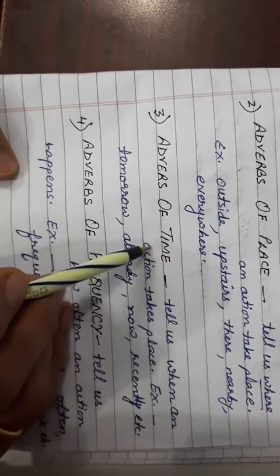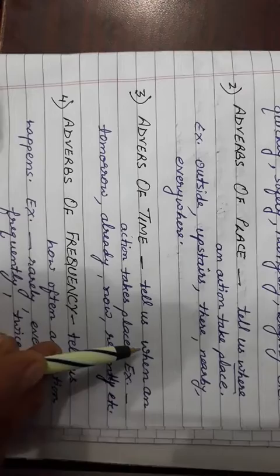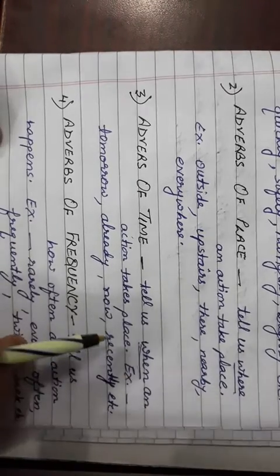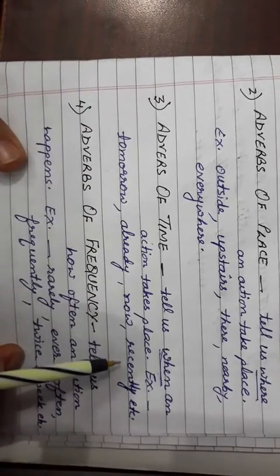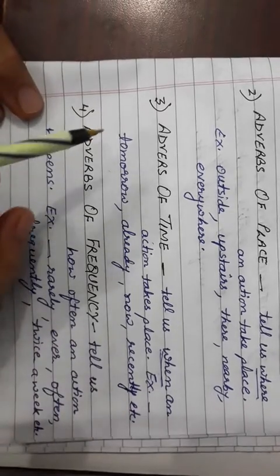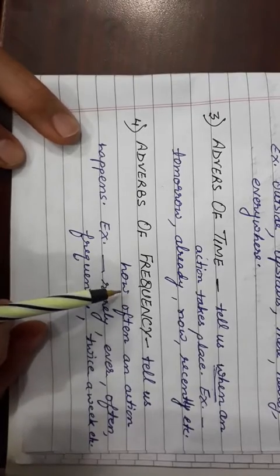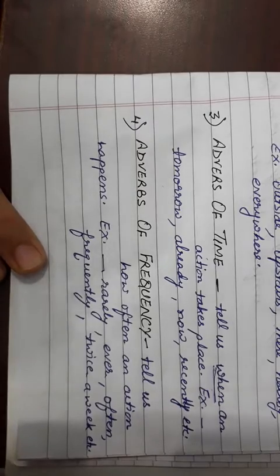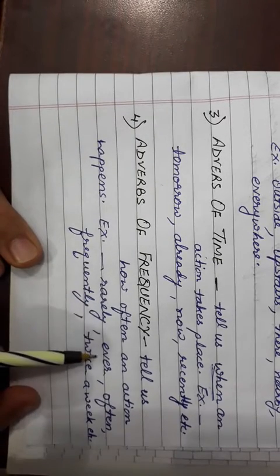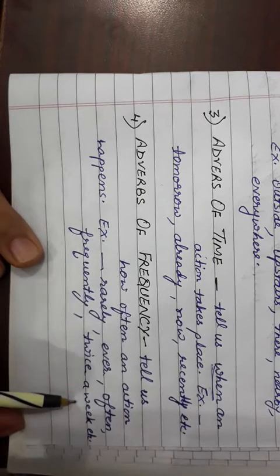Third is adverbs of time. They tell us when an action takes place. For example, tomorrow, already, now, recently, yesterday. These words are adverbs of time. Fourth is adverbs of frequency. Frequency means it happens sometimes or regularly. Examples are rarely, ever, often, frequently, twice a week, etc.